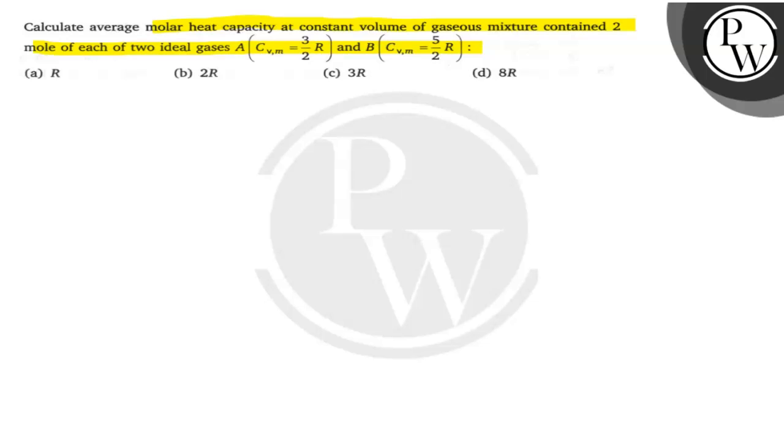The molar average heat capacity, that is Cv mix, will be equal to nA into Cv,mA plus nB into Cv,mB upon nA plus nB.